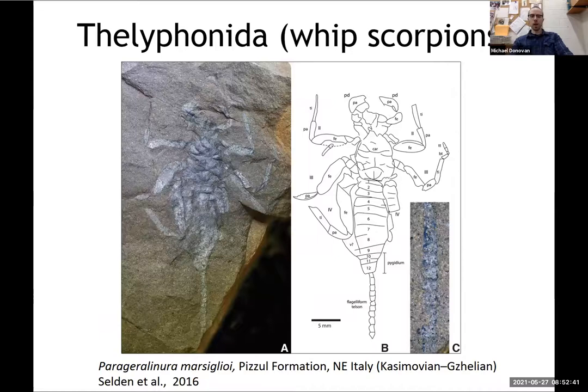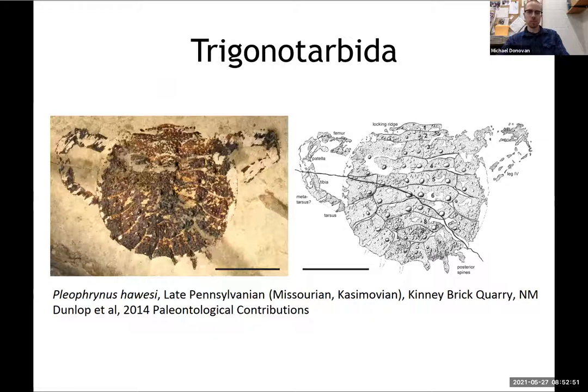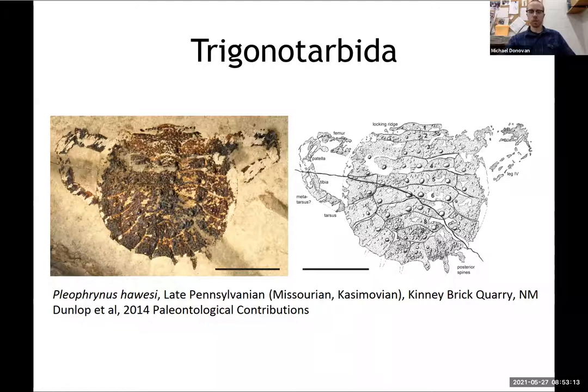Here are some photos of some nice fossils from this time. There's a whip scorpion — these are predators of other arthropods, typically known for their whip-like tail preserved in this fossil. And also probably the most common arthropod fossil during the Casimovian are the Trigonotarbids. These are a really ancient group that appeared in the late Silurian and persisted through to the early Permian. They look kind of similar to spiders but don't have spinnerets, so they cannot produce silk. These were also predators similar to spiders and many other arachnids. This one is also from the Kinnebrick quarry.